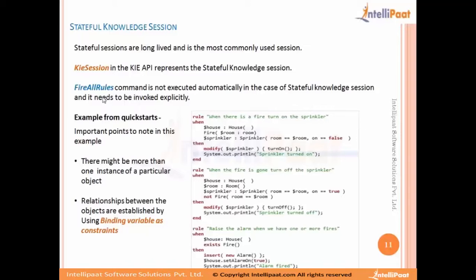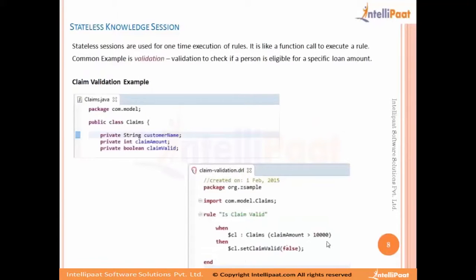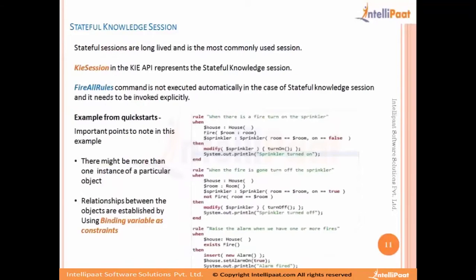When objects are related to each other, that relationship has to be explicitly specified in the rule engine. The rule engine is not going to understand the internal Java class relationships by default. We need to make it understand that two classes are interrelated and linked, and that relationship is established using binding variables in the constraint section. In the field constraints section we previously used literal values, but when an object is related to another object we need to use binding variables.